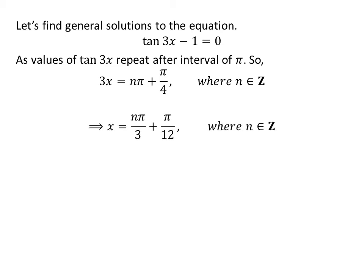Dividing both sides of the equation by 3, we get the general solution x = nπ/3 + π/12, where n is an integer.